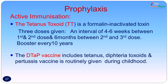Prophylaxis against tetanus can be given as either active or passive immunization. The active immunization — tetanus toxoid, a formalin-inactivated toxin — is important. Three doses are recommended: an interval of four to six weeks between the first and second dose, and a further interval of six months before the third dose. These are valid for about 10 years, and a booster is recommended every 10 years. Tetanus immunization is given along with diphtheria and pertussis as the triple vaccine (DTP), routinely given in childhood.